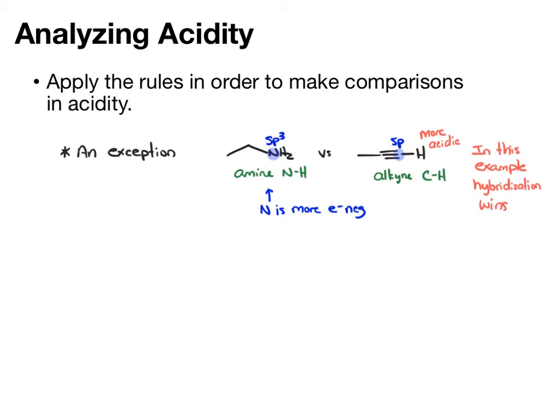Just apply it if you're comparing an alkyne CH and an amine NH group. One other important exception to keep in mind is a carboxylic acid versus a thiole. If you were applying the rules in order, you would get to the atom effect, and you would compare sulfur and oxygen, and you would say, well, sulfur is larger, so it wins its more acidic.